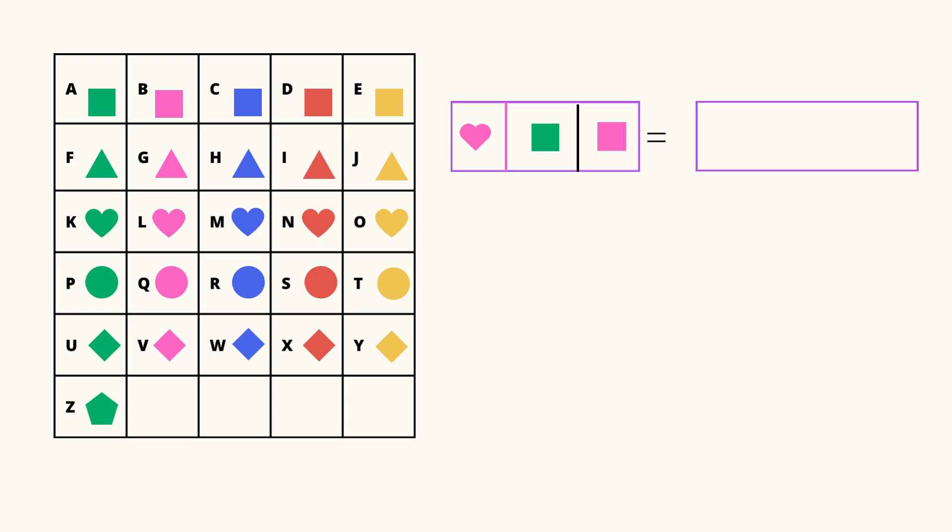A pink heart is L, a green square is A, a pink square is B. L-A-B, lab.